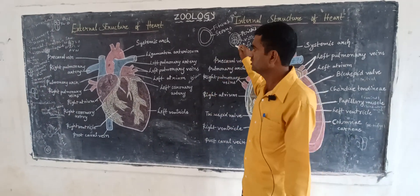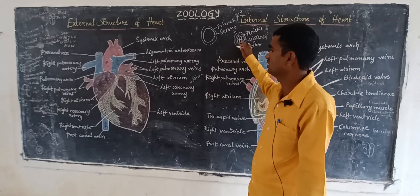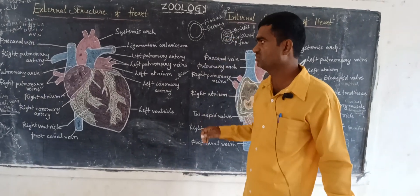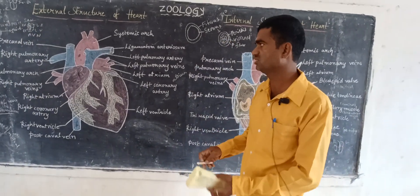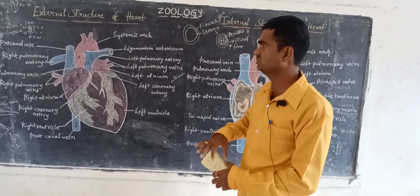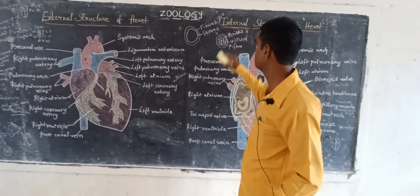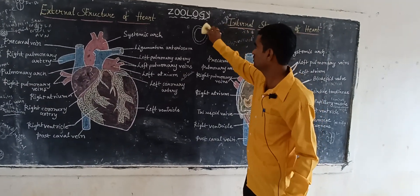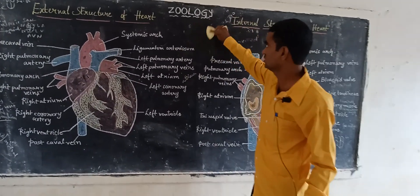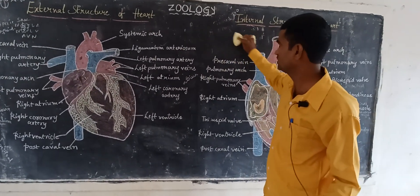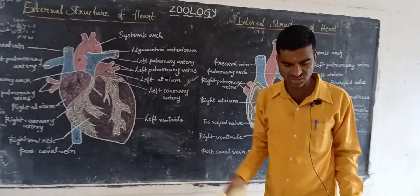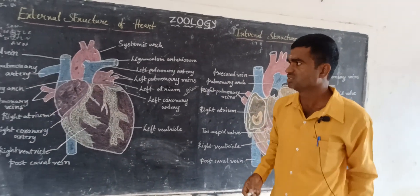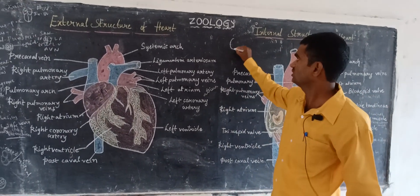The heart is present at the central region of the mediastinum or thoracic region. It is present between the two lungs, slightly to the left side, where the heart is present.